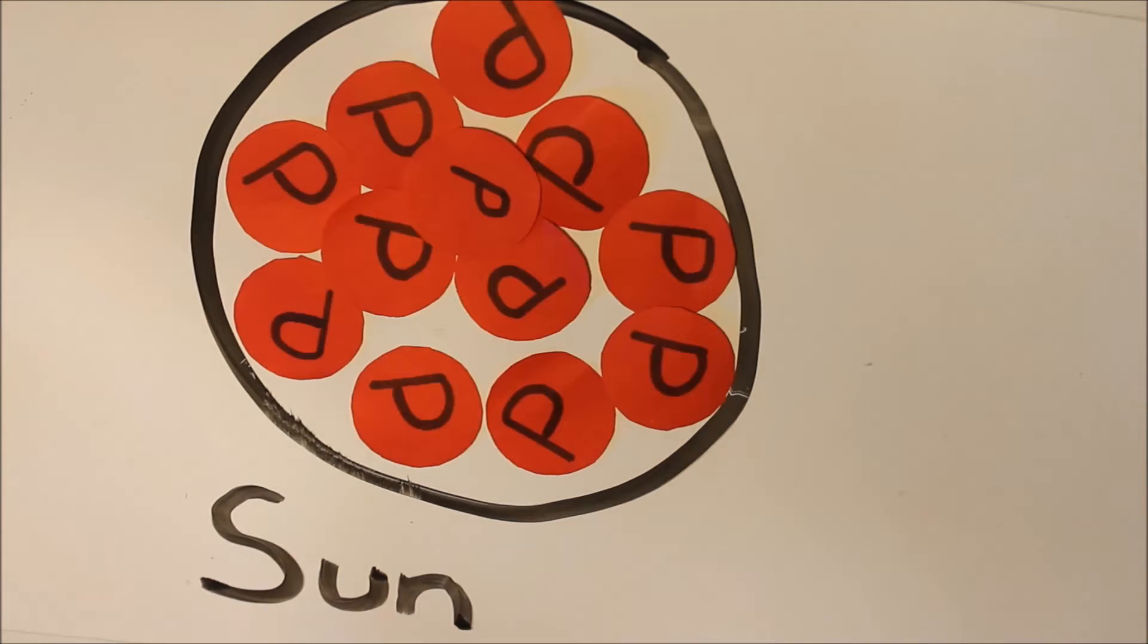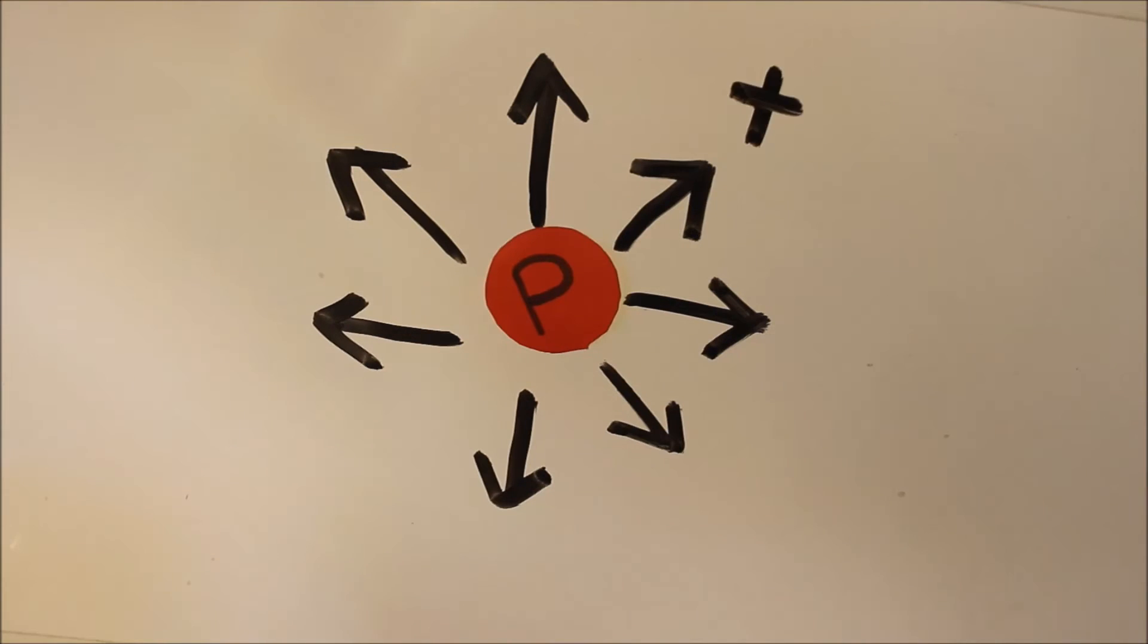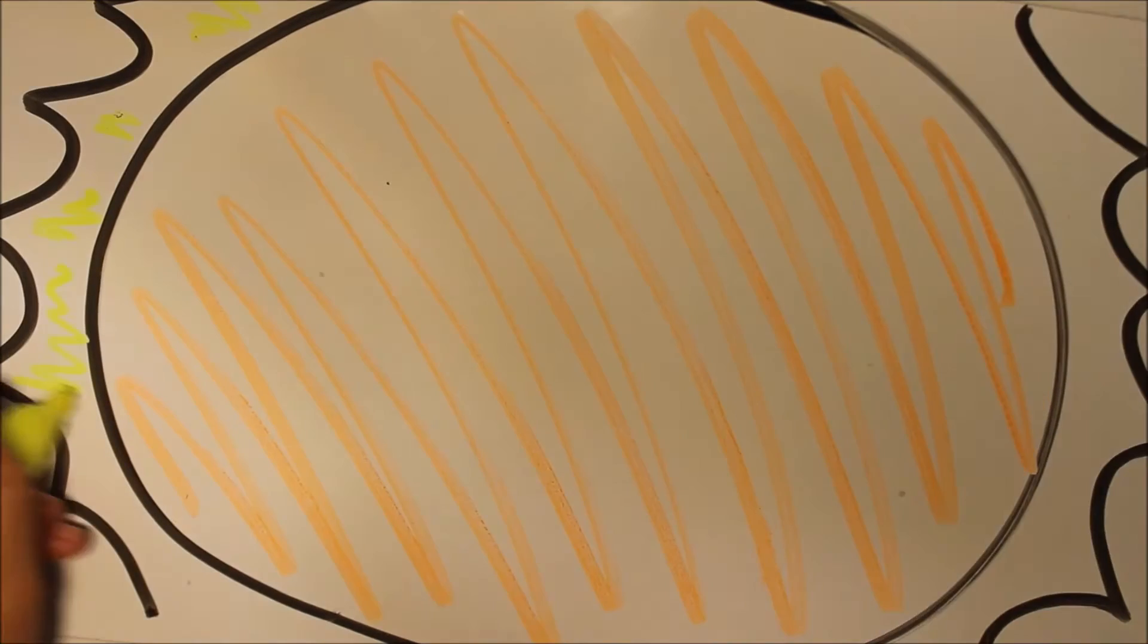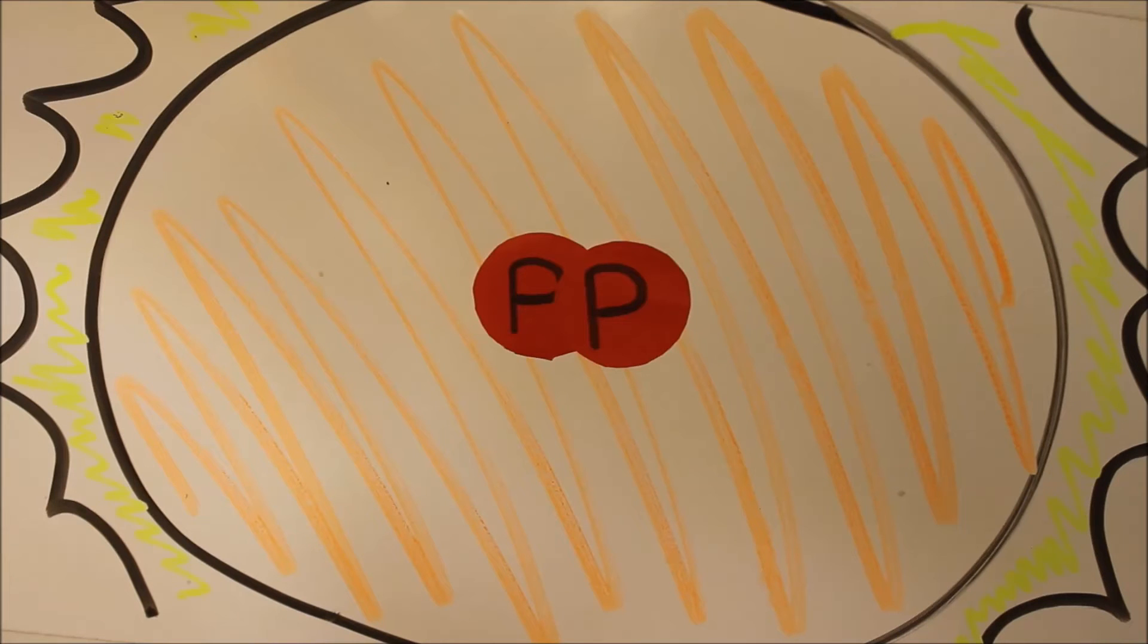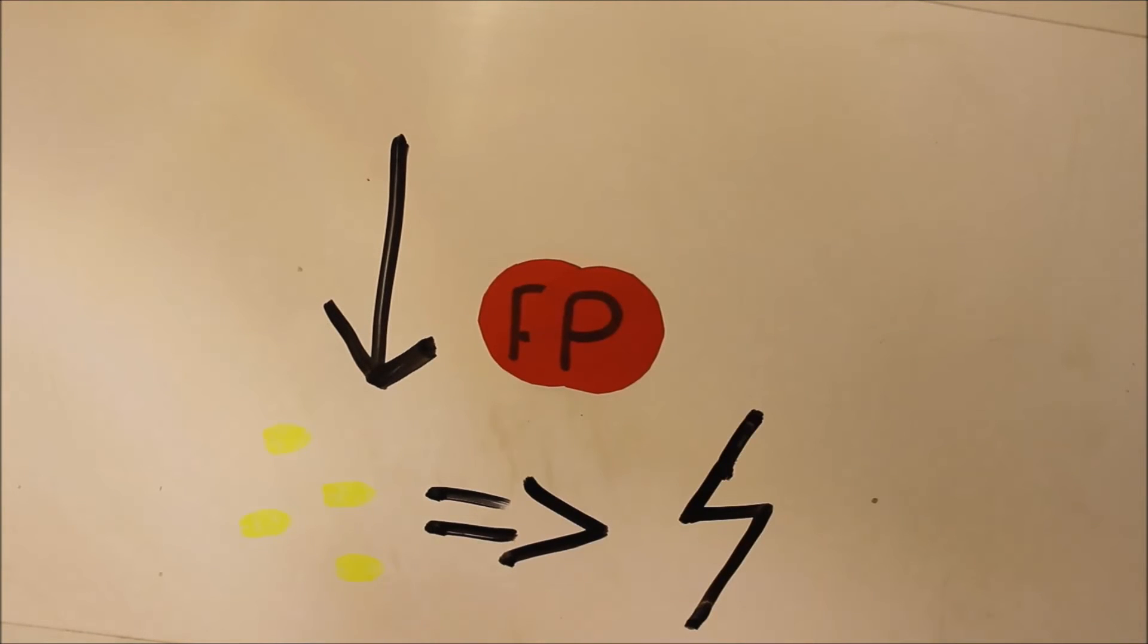Most of the sun is actually made of protons. The protons repel from each other because of the electric field. They are positively charged. The sun is so hot that the protons are moving quickly and they can't avoid the collision. When the two protons collide, they lose mass. The protons get lighter and the mass it loses is converted into energy.